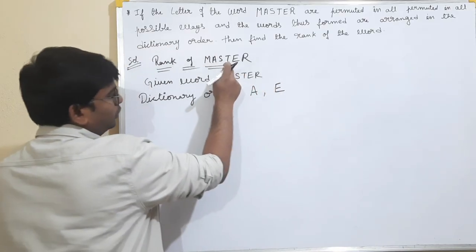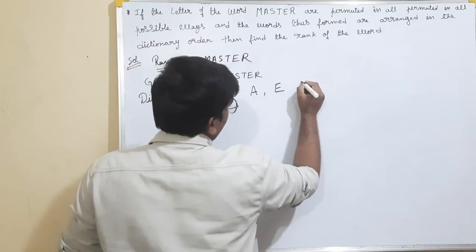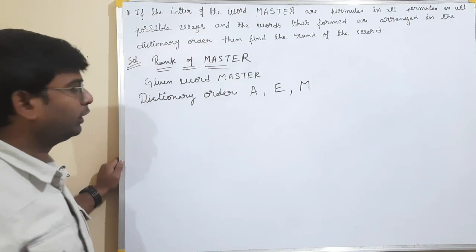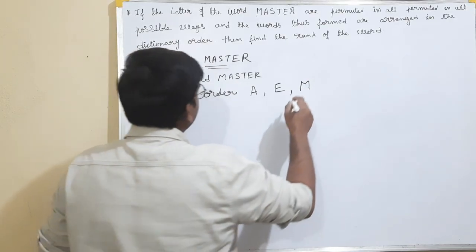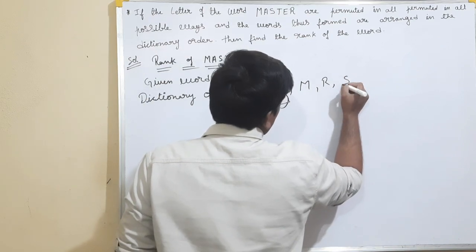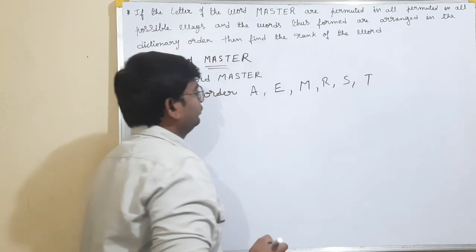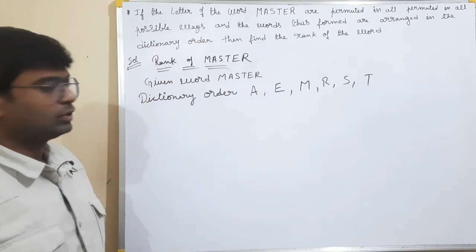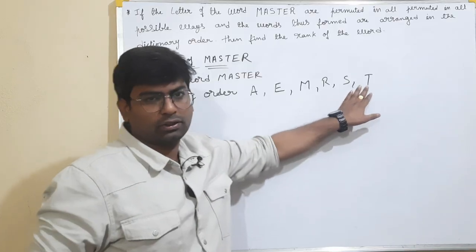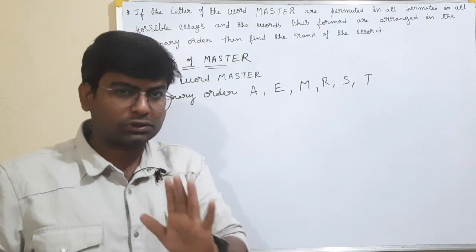Next, E comes. Next, M comes. Next, S. Next, T. So, you will write the word in the alphabetical order. This is a very easy sum. Most of you will learn this for the exam.